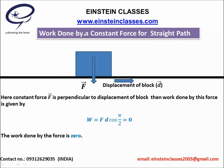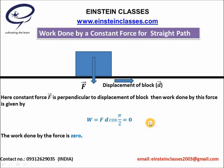Now we are considering another case: work done by a constant force for a straight path where the force is acting vertically downward and the displacement is along the horizontal direction. That means the angle between the force and displacement is 90 degrees, or pi by 2. In this situation, the work done is F D cos(pi/2). Since cos(pi/2) equals 0, the work done by this force comes out to 0. Whenever the force is perpendicular to the displacement of the block, the work done by that force will be 0.